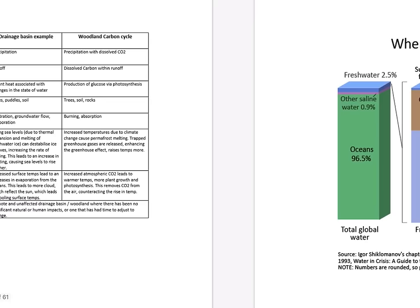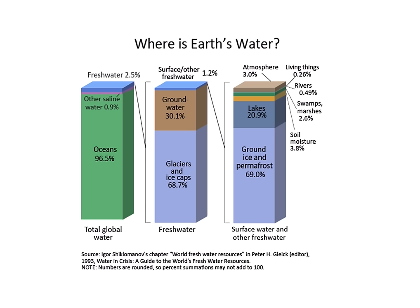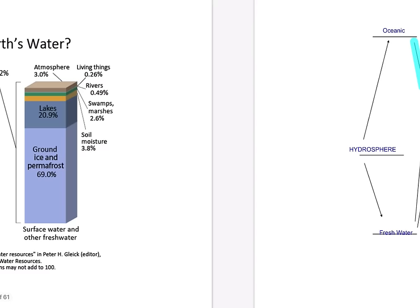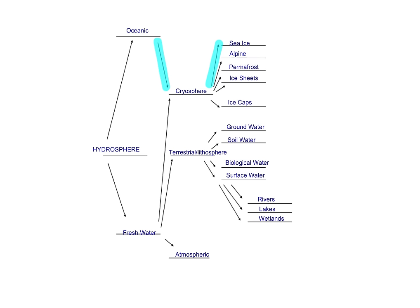Moving on to the global distribution, size, and major stores of water — this diagram is pretty important. Currently about 3% of water is fresh water; 70% of that is frozen, 1% is surface water. Of surface water, 50% comes from lakes, 40% from soil, and 10% from other sources. The location of water can be split into four spheres: lithosphere, hydrosphere, cryosphere, and atmosphere.